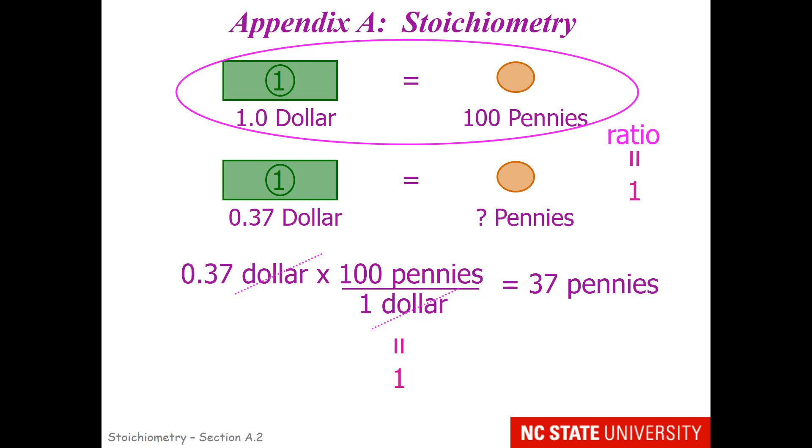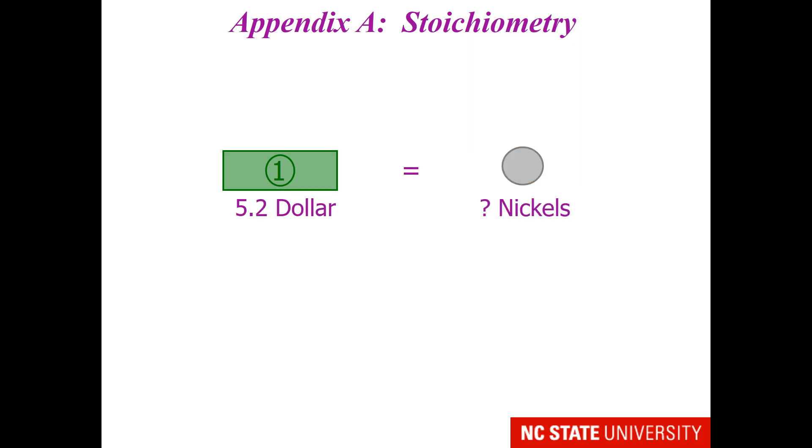Let's try something a little more challenging. What if I asked you how many nickels are in 5.2 dollars? Now, most of you would say to yourself, well, I know that there are 20 nickels in 1 dollar. So, that would be 5 times 20, that would be 100, and then I need 20 cents, so that would be 4 more. 104.